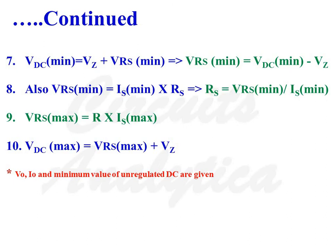Applying KVL, VDC is equal to VZ plus VRS. Therefore VDC minimum equals VZ plus VRS minimum, or VRS minimum equals VDC minimum minus VZ. According to Ohm's law, VRS minimum equals IS minimum times RS. Therefore RS equals VRS minimum divided by IS minimum.